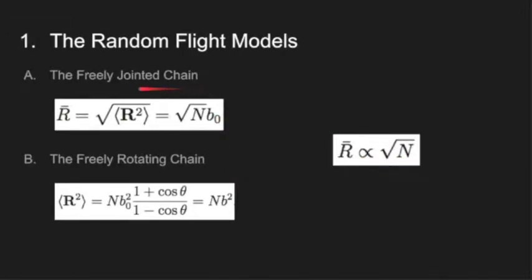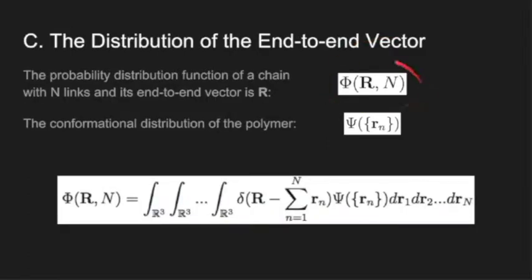So for the random flight models, we get r̄ proportional to √N. In order to have a good grasp of the global property of polymers, we introduce another parameter: the distribution function of the end-to-end vector φ(r,N). This denotes the probability distribution function of a chain with N links whose end-to-end vector is r. This function gives us a great way to study the global properties of polymers because it has nothing to do with the polymer's local structures. So now, we are going to improve our model by studying the statistical distribution of the end-to-end vector of the random flight models.